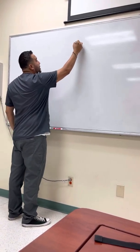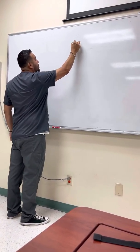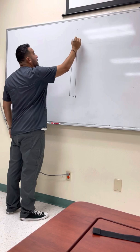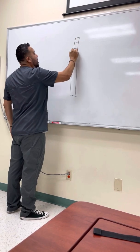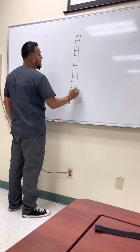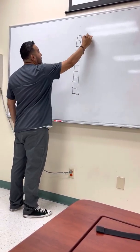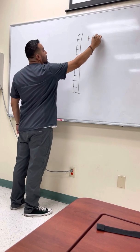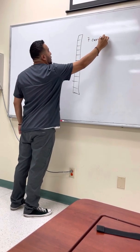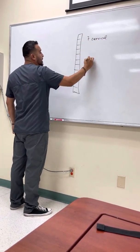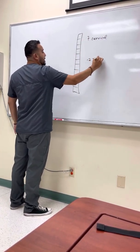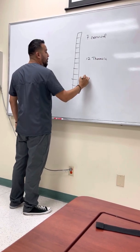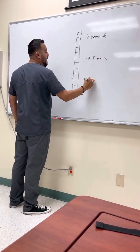If you can imagine your vertebrae — this represents your vertebrae. We have seven cervical, twelve thoracic, and five lumbar.